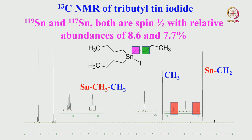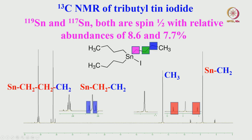The next CH₂ carbon also shows satellites on either side. Going further, another CH₂ coupled to tin shows its coupling here, though it is not well resolved enough to clearly show both tin-117 and tin-119 couplings separately—whereas for the directly attached CH₂ carbon it is clearly seen.